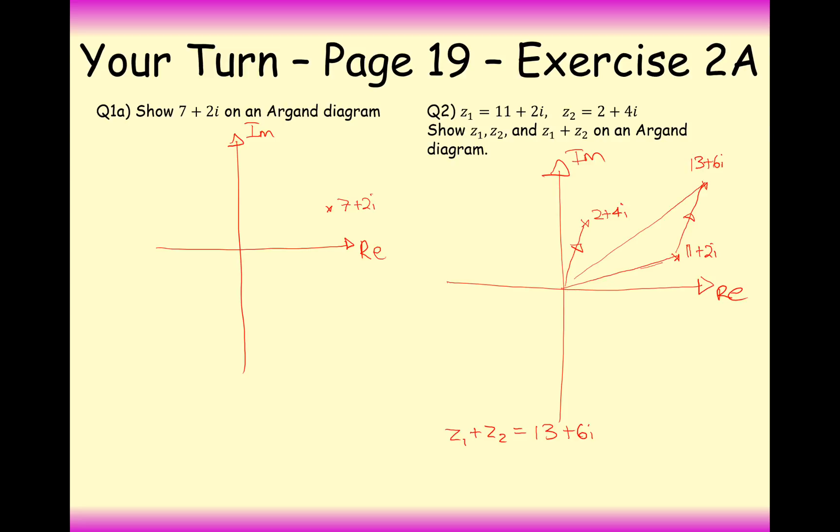All right then, so that's all we have to do with Argand diagrams. Remember we've got to also be able to find the modulus of a complex number, so that's just a little bit of Pythagoras' theorem there. All right then, so hopefully that was fairly straightforward. Have a go at questions from exercise 2a, and then move on to the next part. Thanks for watching. Bye.